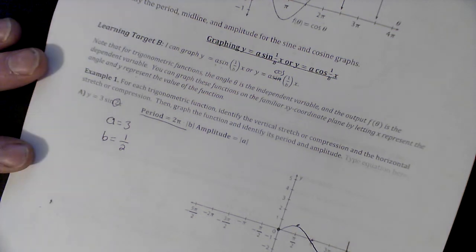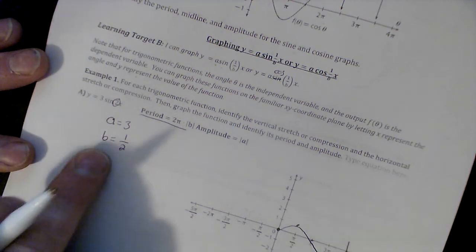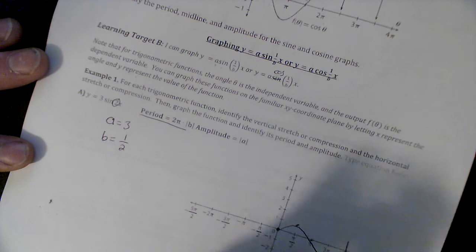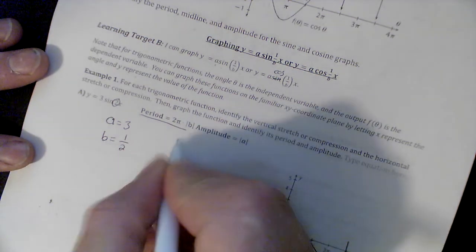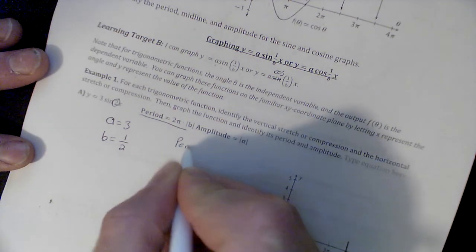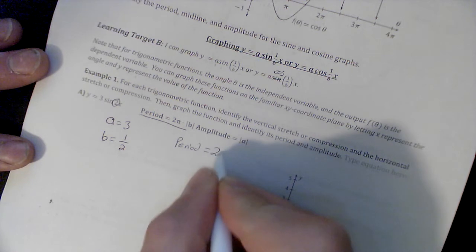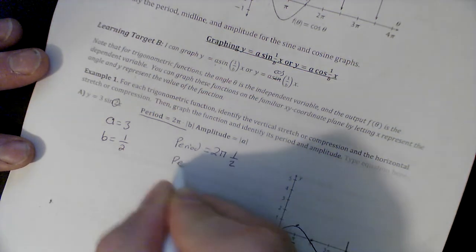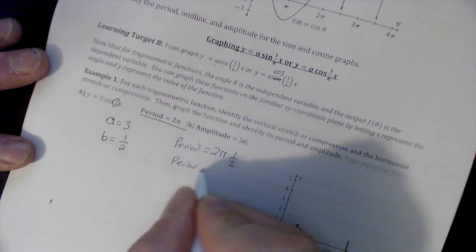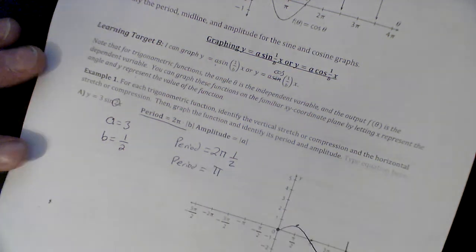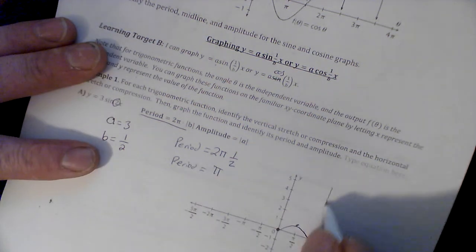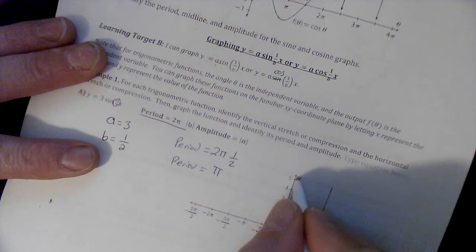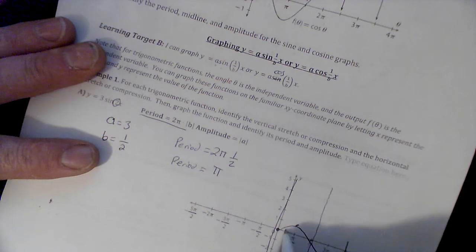My horizontal value has been shrunk, so my period - and here is the formula - my period that used to be 2π has now been shrunk by 1/2, so my period is now π. My period now goes from here to here. I'm going to have to add π/4 and 3π/4 for this to work.